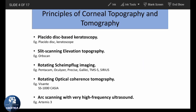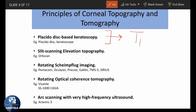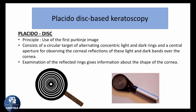These are the various principles or techniques of corneal topography and tomography, placed in order of their evolution. The first technology is Placido disc-based keratoscopy. The second is slit scanning elevation topography. The third is rotating Scheimflug imaging. Next is rotating optical coherence tomography, and the last is arc scanning principle with very high frequency ultrasound. Placido disc technology gives only topography, while the rest give both tomography and topography as they are more advanced. We will now study each technique separately.